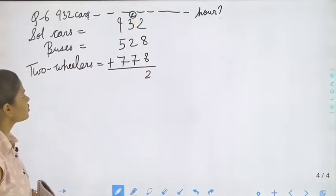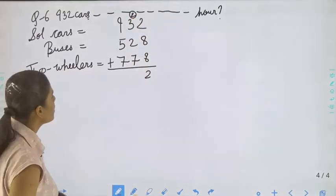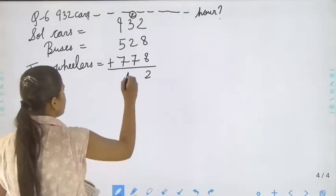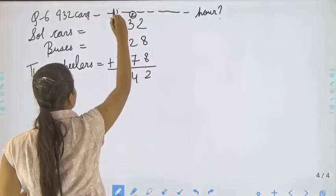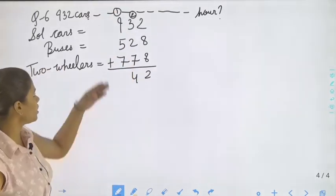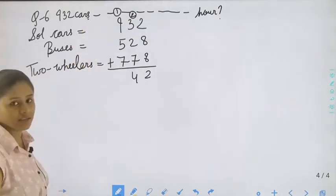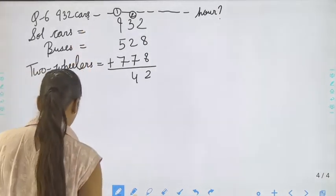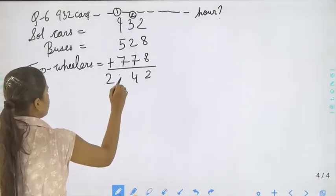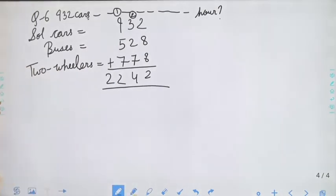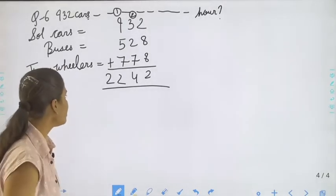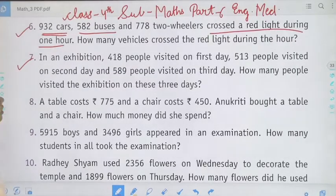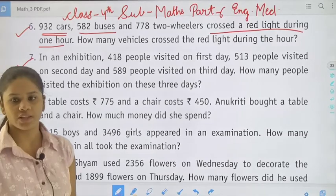That is 22. 3 plus 2 that is 5, 5 plus 2 that is 7, 7 plus 7 it will be 14. 9 plus 1 is 10, 10 plus 7 that is 17, and 17 plus 5 that is 22. Students, 2242 vehicles crossed the red light during the hour.